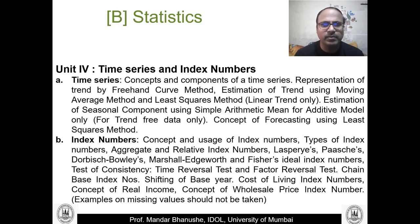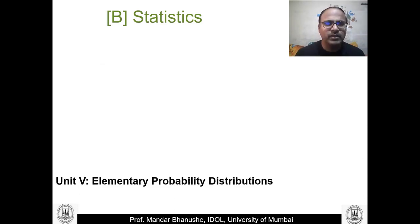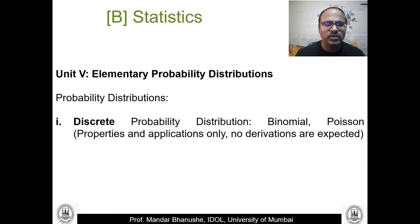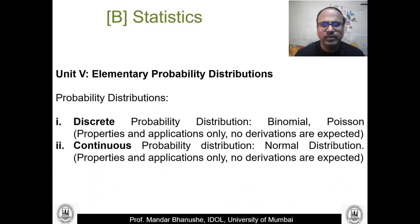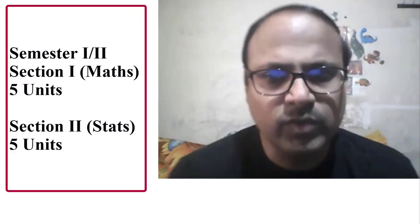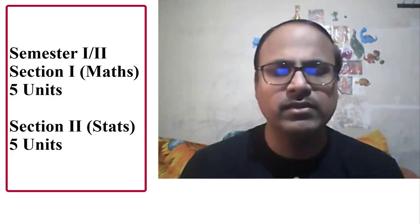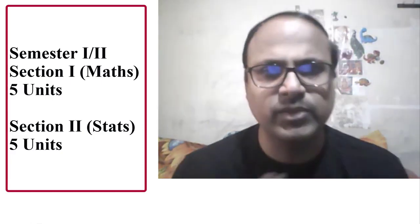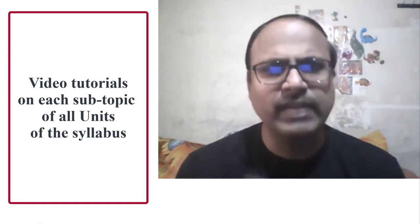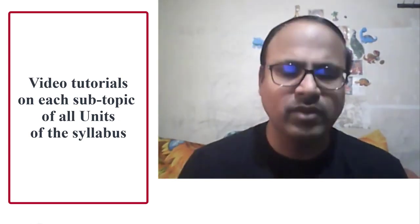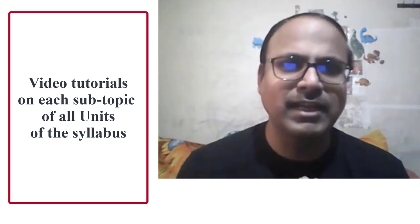The final unit is on probability distributions, covering two types — discrete and continuous — with examples. That completes semester two. In total we have 10 units: five in semester one and five in semester two, distributed across mathematics and statistics sections. We shall have detailed video lectures based on all these topics.